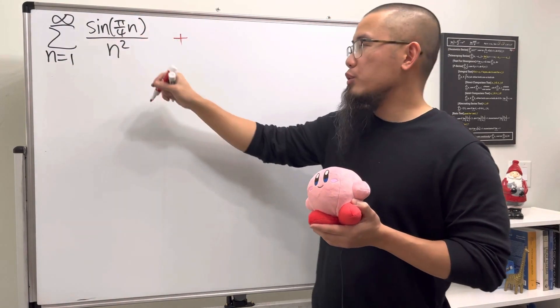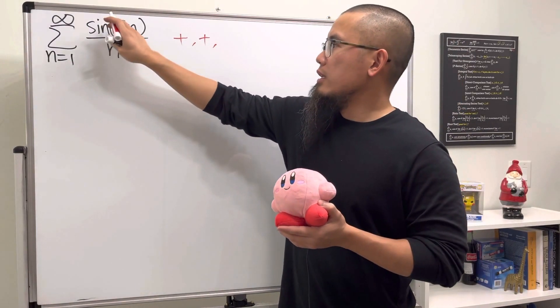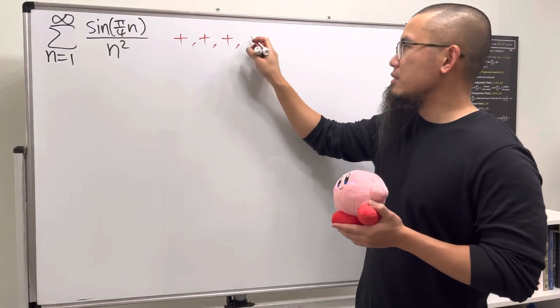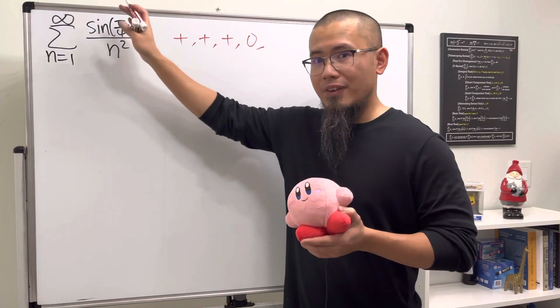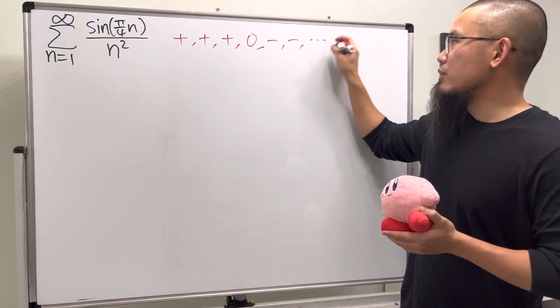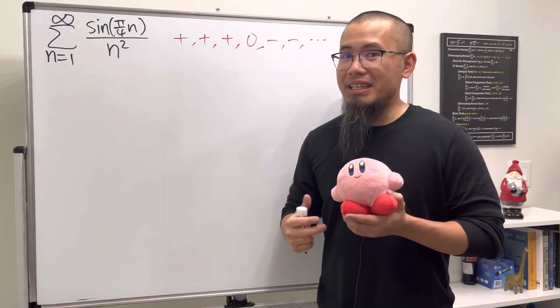If you continue, sine of 3π/4 is positive, then sine of π is zero, then sine of 5π/4 is negative, and then you get negative and so on.